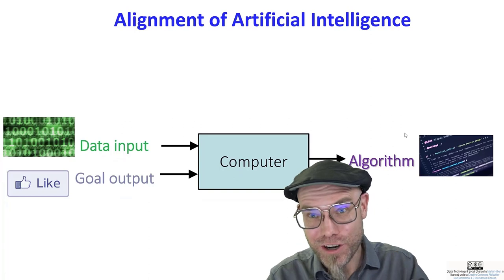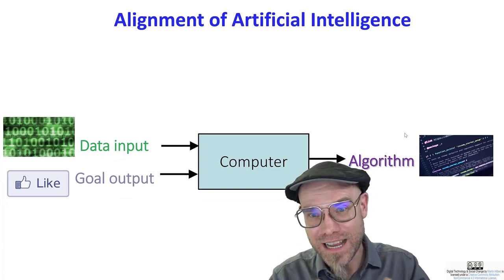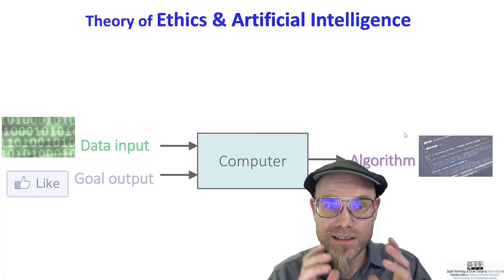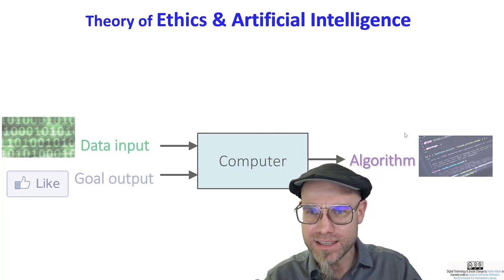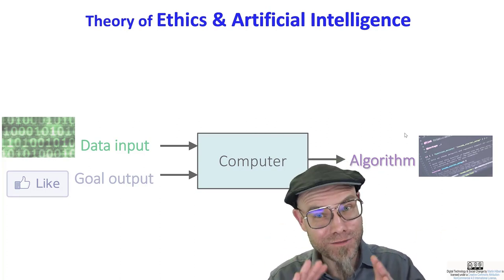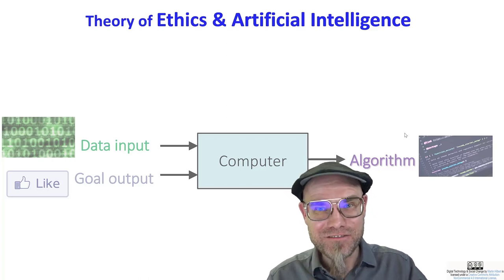If we replace the modern discussion, the current discussion of alignment of artificial intelligence with the theory of ethics and artificial intelligence, we can actually break it down in the different component parts. And the old theory is still valuable.